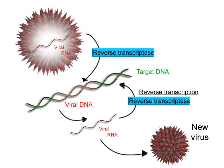Transcription proceeds in the following general steps. RNA polymerase, together with one or more general transcription factors, binds to promoter DNA. RNA polymerase creates a transcription bubble, which separates the two strands of the DNA helix by breaking the hydrogen bonds between complementary DNA nucleotides. RNA polymerase adds RNA nucleotides, and the RNA sugar phosphate backbone forms to create an RNA strand. Hydrogen bonds of the RNA-DNA helix then break, freeing the newly synthesized RNA strand.